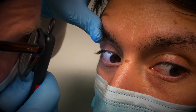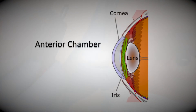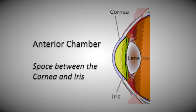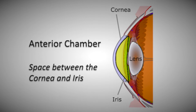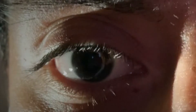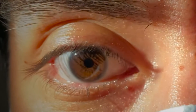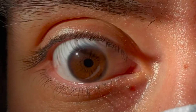Once you've finished noting all these structures, move on to assessing the anterior chamber depth. The anterior chamber is the space between the cornea and the iris. By shining the light from the temporal side, the depth of the anterior chamber can be assessed. A shadow on the nasal iris can suggest a shallow anterior chamber.